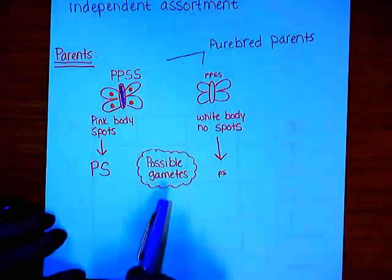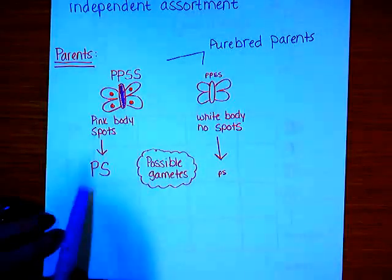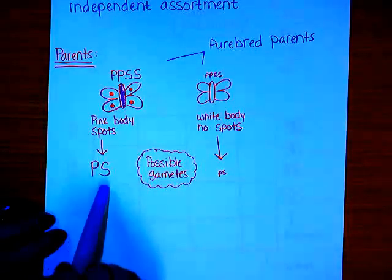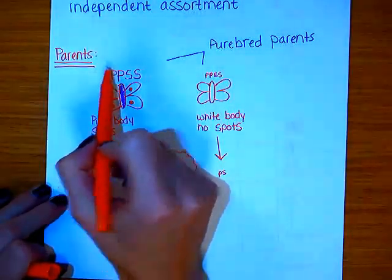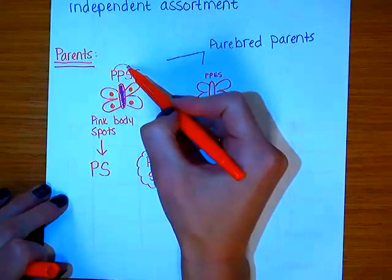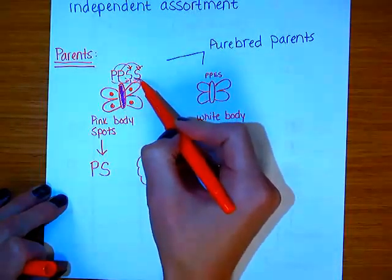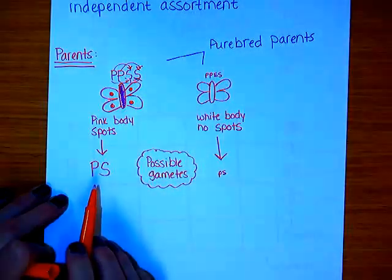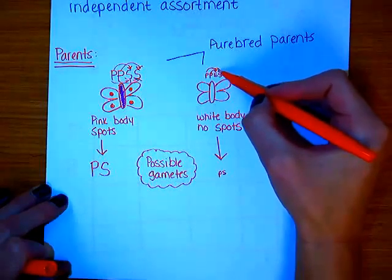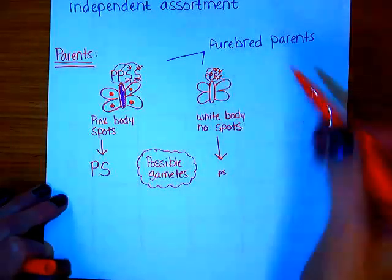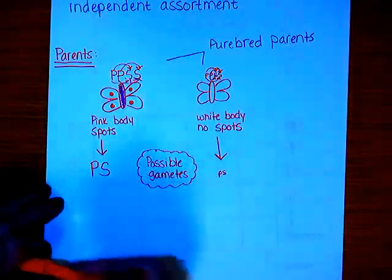If we figure out the possible gametes for each of these parents, for the first butterfly all possible gametes are going to be big P, big S. No matter which way we do our crosses, we always end up with big P and big S. And for the other parent, no matter how we cross, it always comes out little p, little s. So our possible gametes are big P, big S and little p, little s.